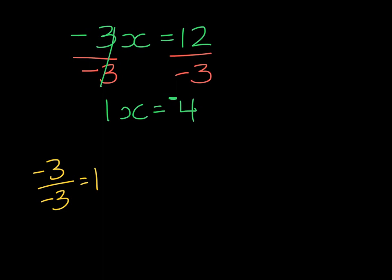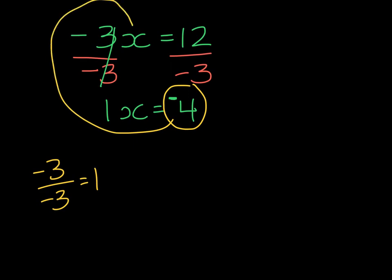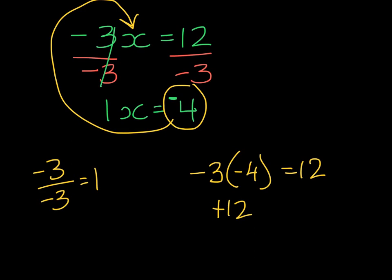At this point remember we can take negative 4, substitute it into the original equation, and see if negative 3 times negative 4 gives us 12. When we multiply two numbers that both have negative signs together that gives us 12. So we've done this correctly.